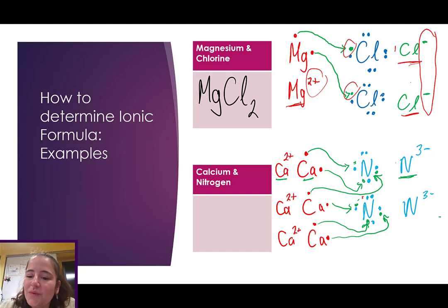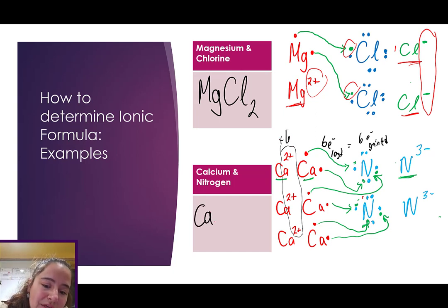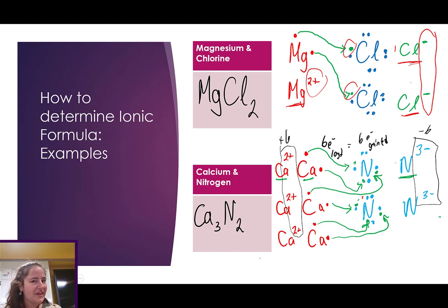So, if we're looking at this, now it's all balanced. We have six electrons lost from the calcium atoms equals the six electrons gained by those two nitrogen ions, aka, we have a total charge of +6 from three calciums and a total charge of -6 from two nitrogens, making the formula of calcium nitride Ca3N2.